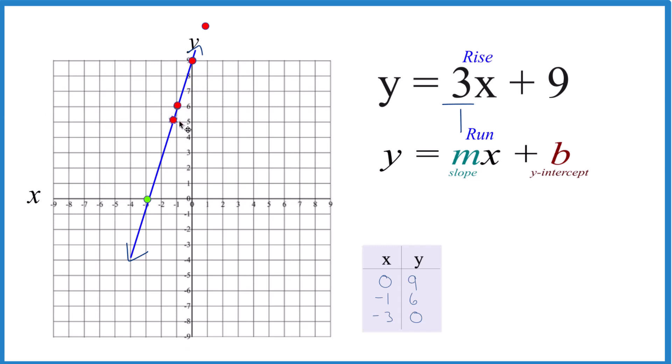Let's do it again. Down 1, 2, 3, over 1 to the left. And you can see that these points, they're all on the line for y equals 3x plus 9. So slope-intercept form gives you the same answer, but it's kind of a nice way to do it.